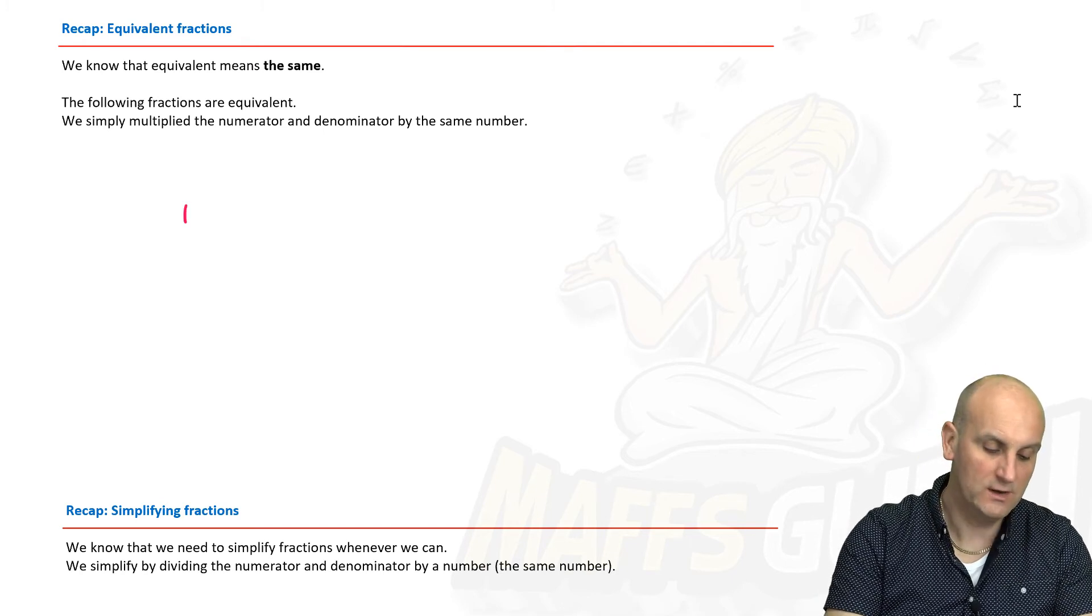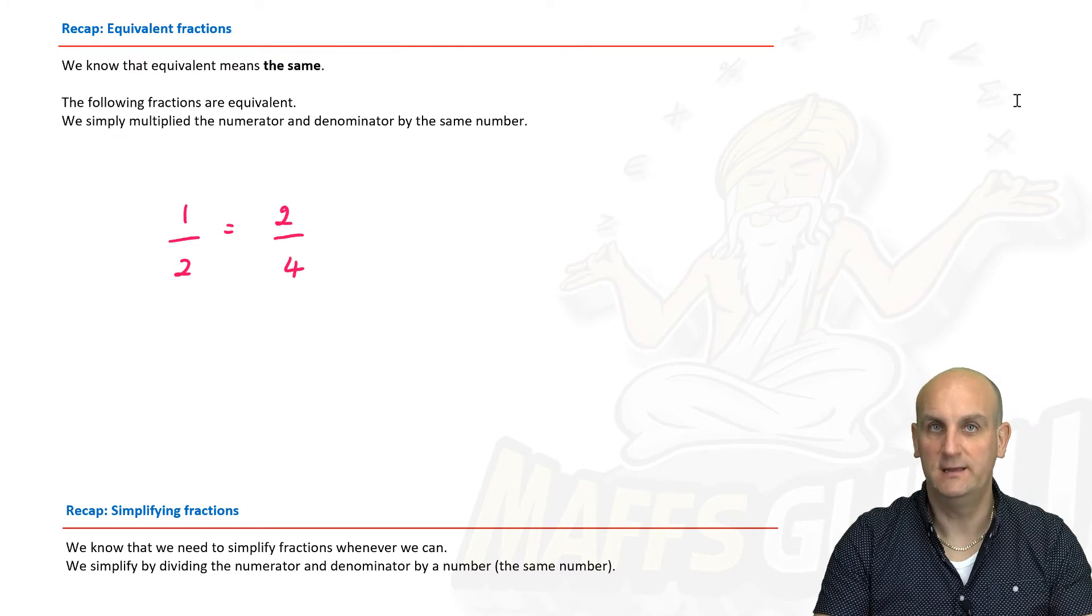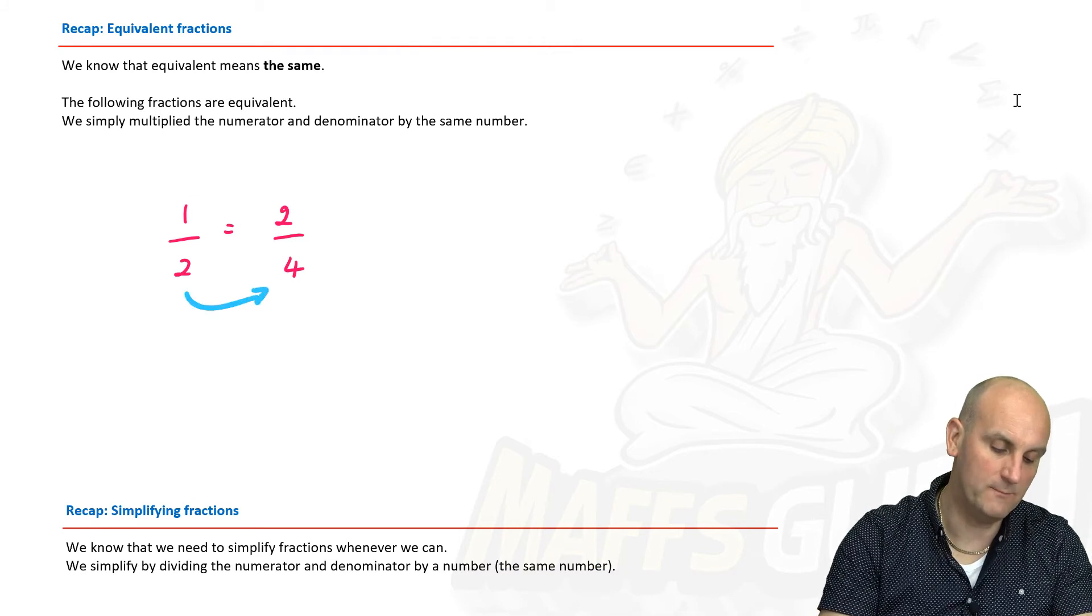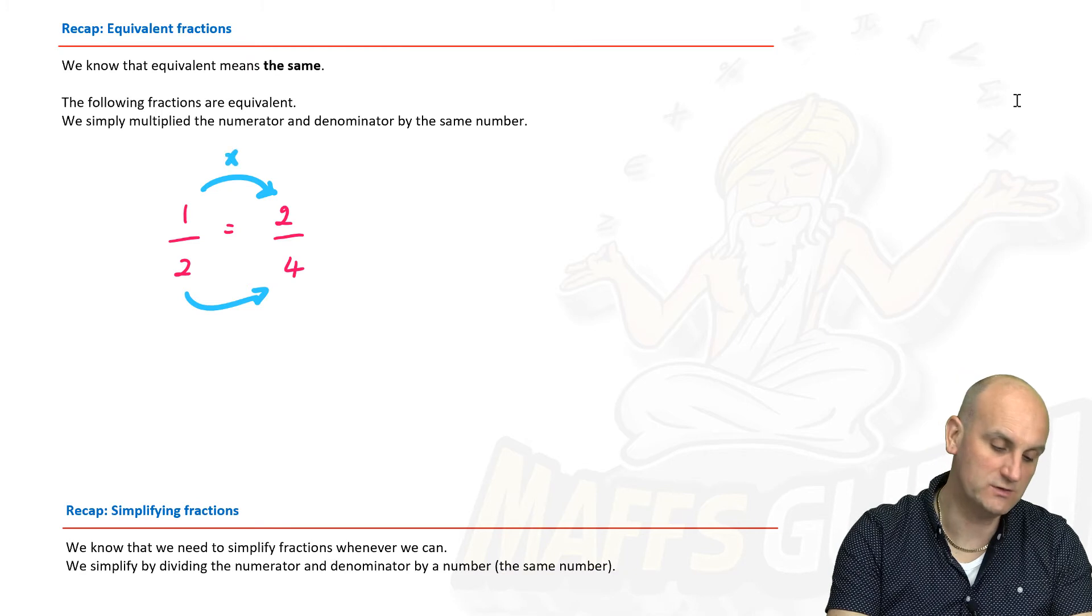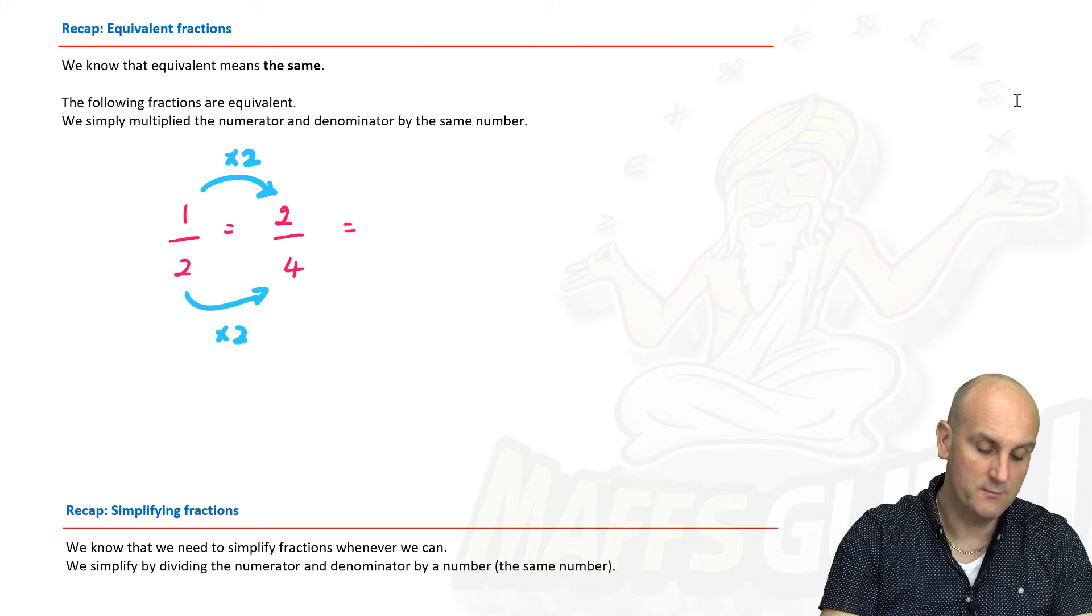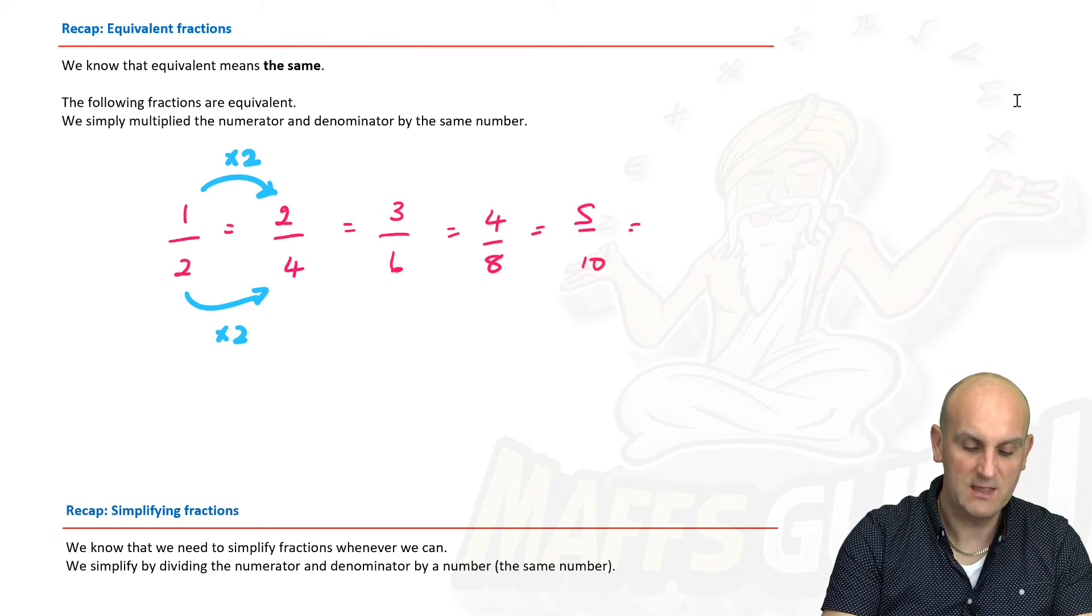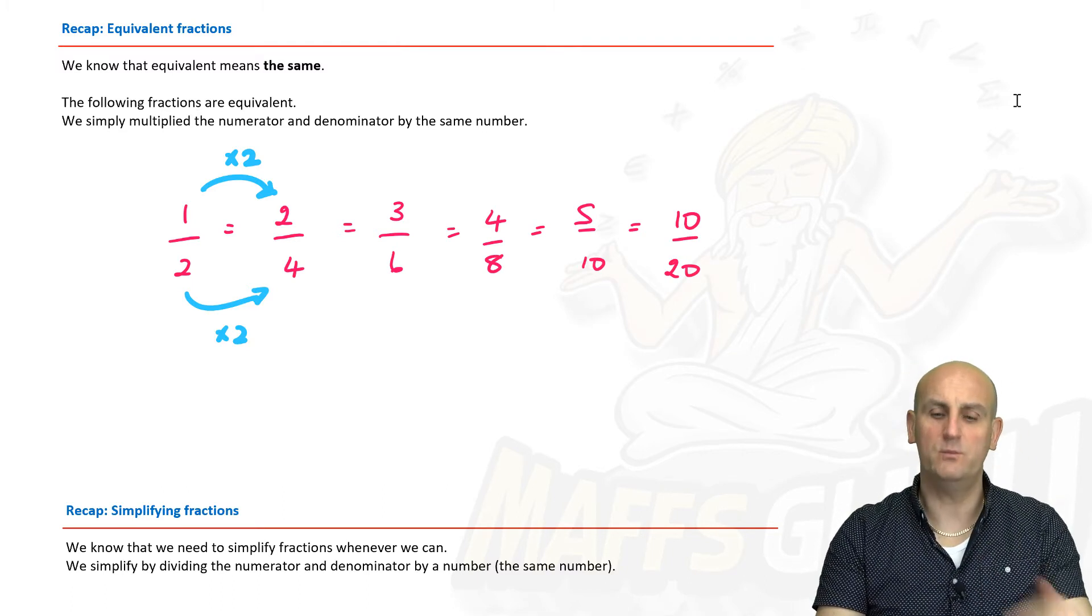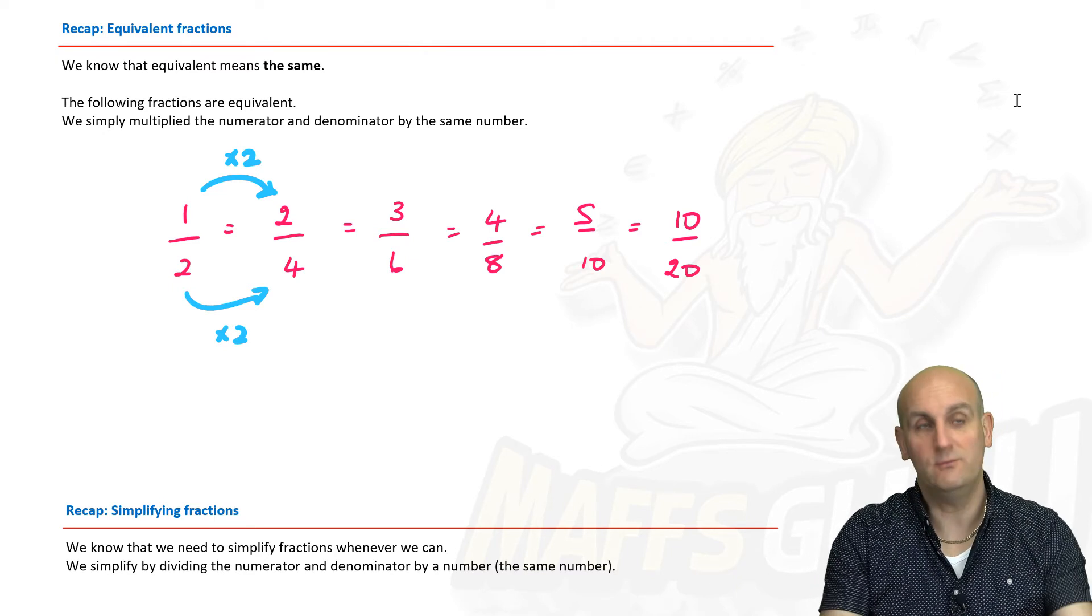Now basically this is pretty much the same as equivalent fractions. Do you remember our equivalent fractions? Well, if I have a half, is that the same as two quarters? Of course it is, because if I was to simplify two on four we get a half. But when we're doing it the other way around, when we're making things bigger, then basically we're using equivalent fractions. So I've multiplied the top by two and multiplied the bottom by two as well. But that's the same as three on six, four on eight, five on ten, ten on twenty. All of those will cancel down.